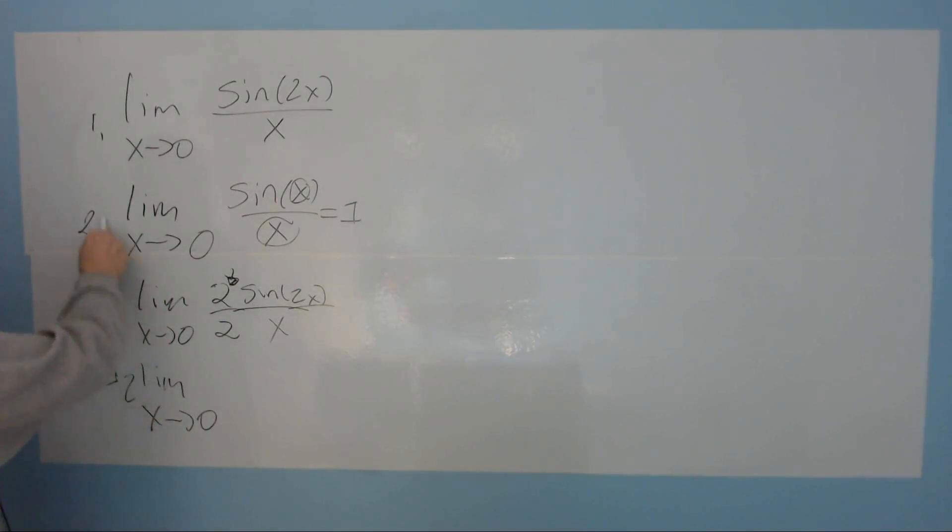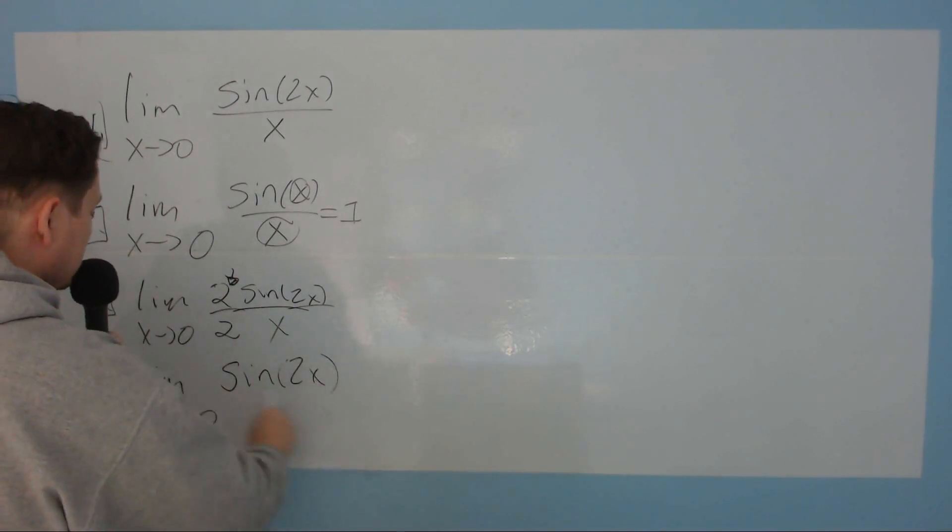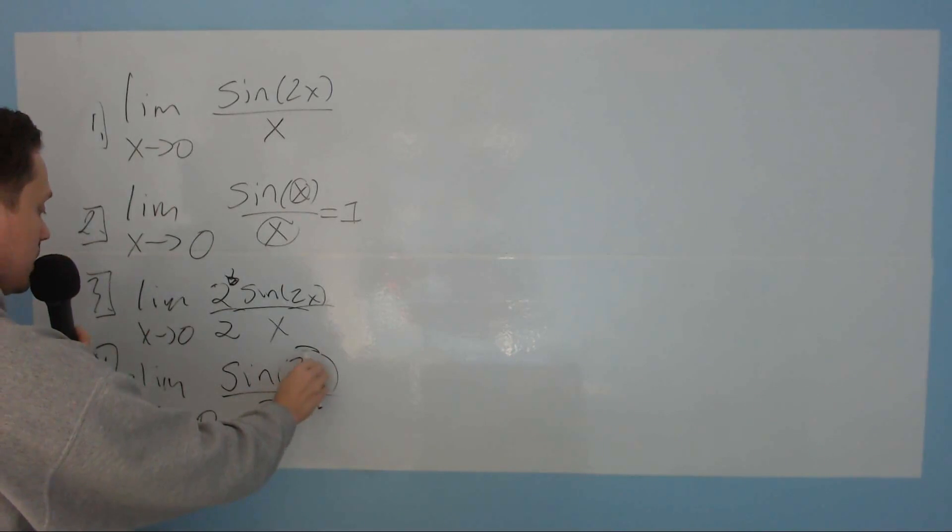So I end up now with 2 times the limit as x goes to 0 of sine of 2x over 2x. So the top 2 went out. The bottom 2 I put together with the x. And I've done that because now this piece right here matches that piece.